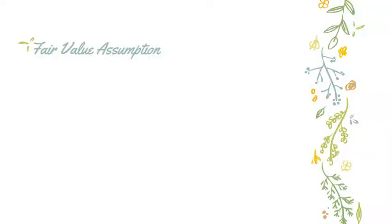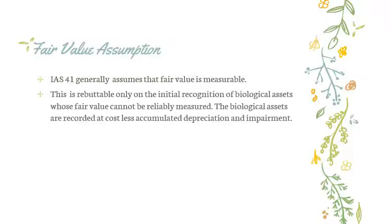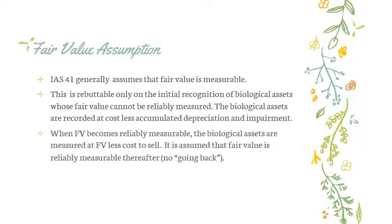IAS 41 generally assumes that the fair values of biological assets and agricultural produce are always determinable. The only time when an entity may not use fair value and may use cost instead is on the initial recognition and subsequent measurement of a biological asset whose fair value cannot be reliably measured. Once fair value can be reliably determined, the entity must measure the biological asset at fair value less cost to sell. Thereafter, it can no longer go back to measuring the asset at cost.